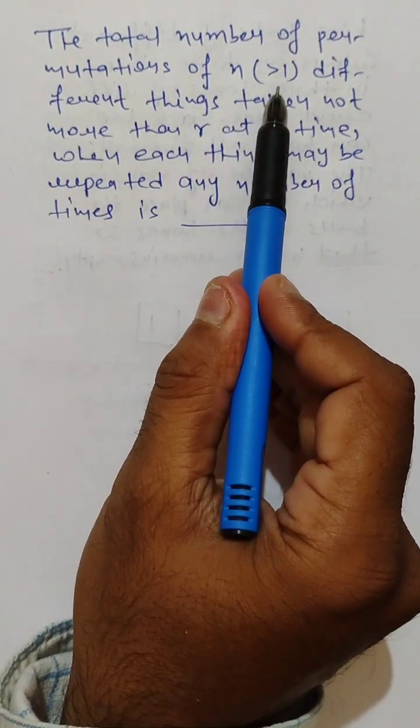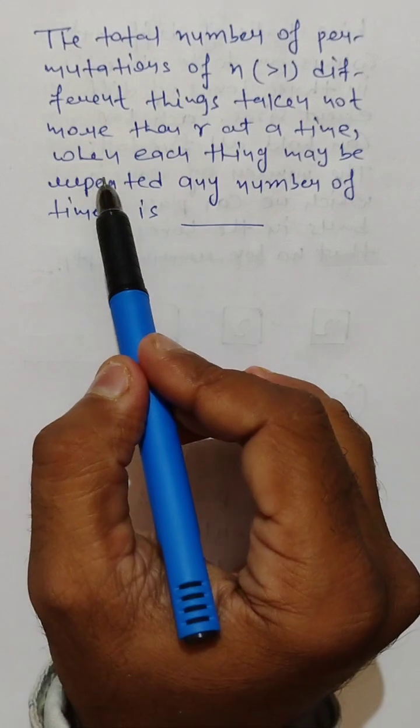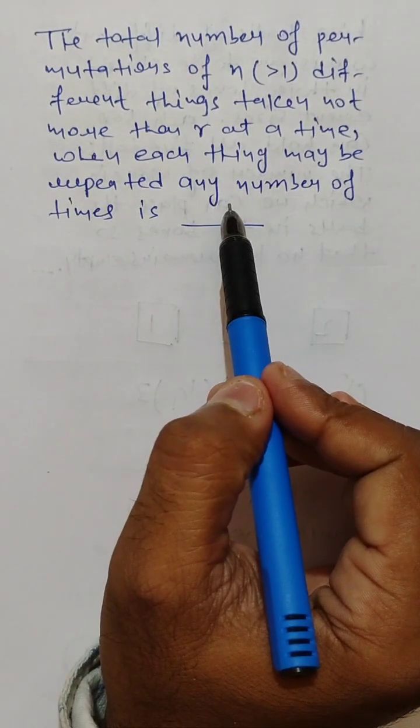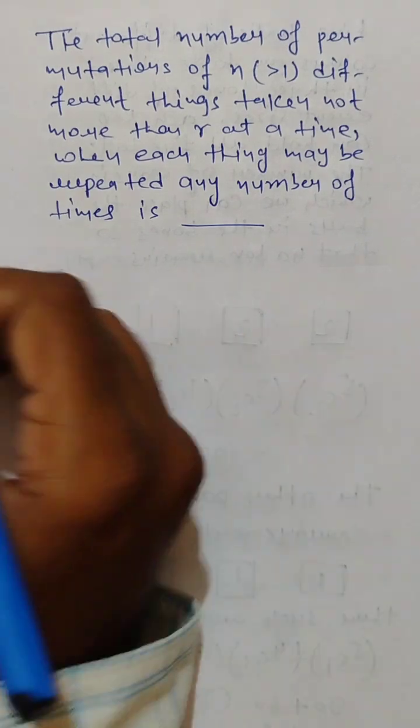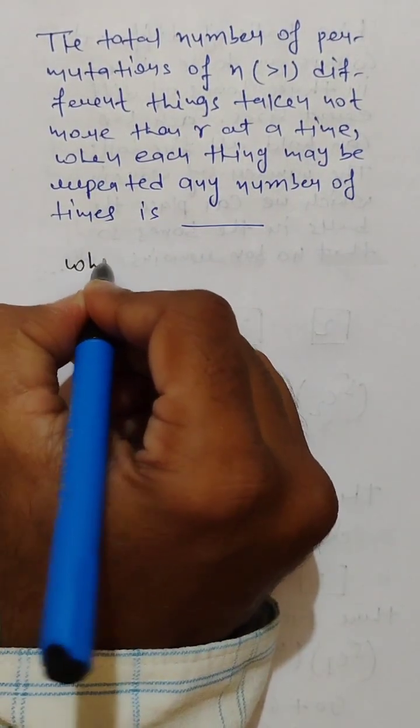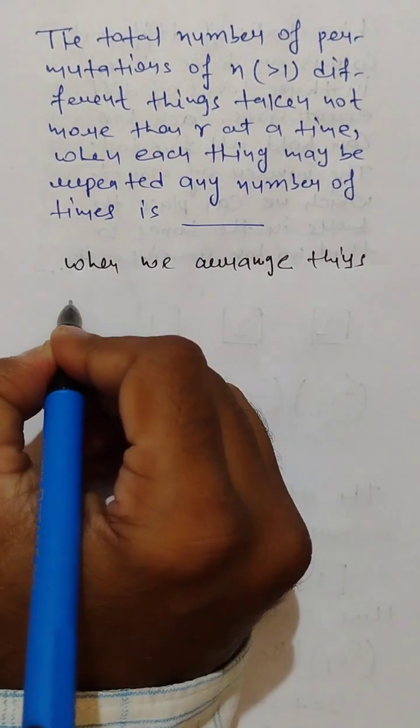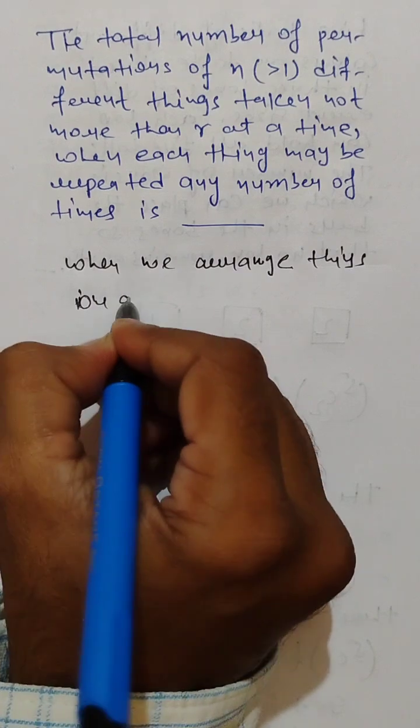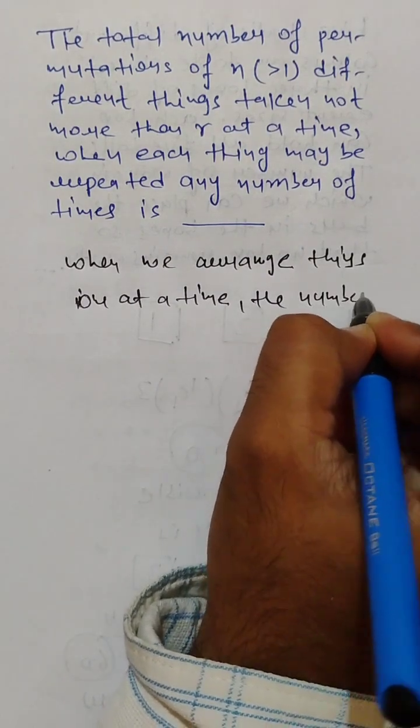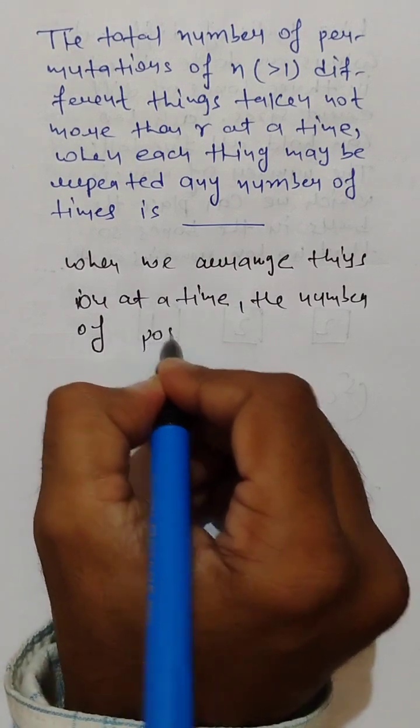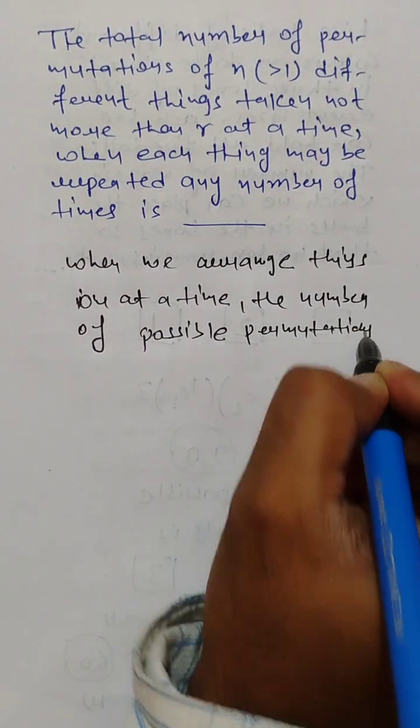Here, the total number of permutations of n (which is greater than 1) different things taken not more than r at a time, when each thing may be repeated any number of times. So when we arrange things one at a time, the number of possible permutations is